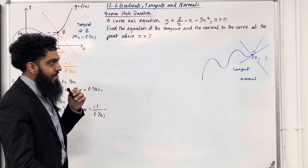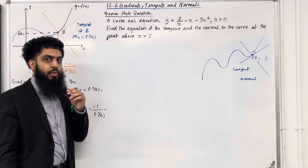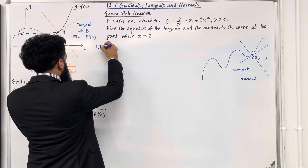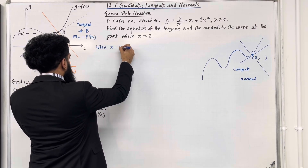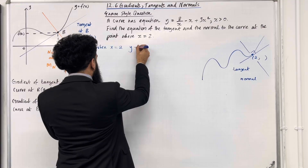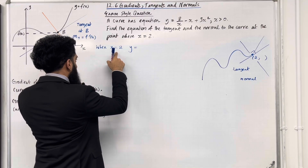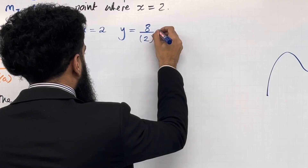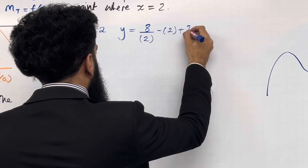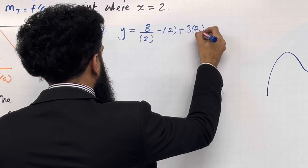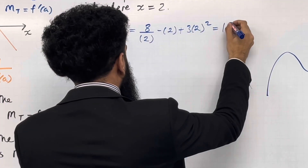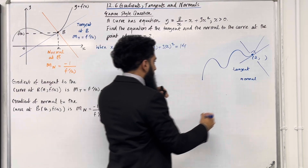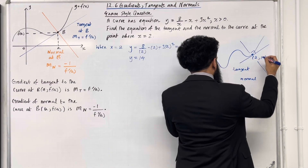Let's start by finding the y-coordinate when x is equal to 2. We work out the y-coordinate by substituting x equal 2 into the y equation: 8 over 2 minus 2 plus 3 lots of 2 squared. This gives me 14. So the y-coordinate is 14, and I can label this on the diagram.